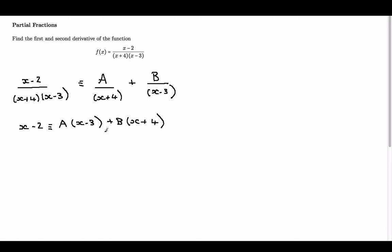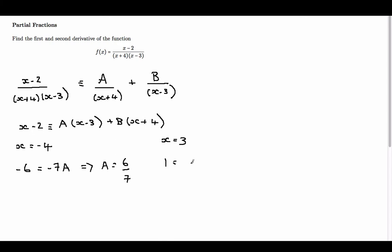We now need to substitute in values of x to calculate A and B. If we substitute x equals minus 4, that bracket goes and we're left with minus 6 equals minus 7A, so A equals 6 over 7. If we substitute x equals 3, we get 1 equals 7B, so B equals 1 over 7.